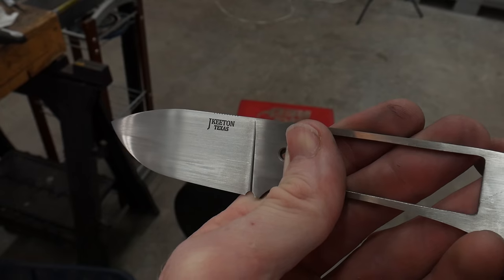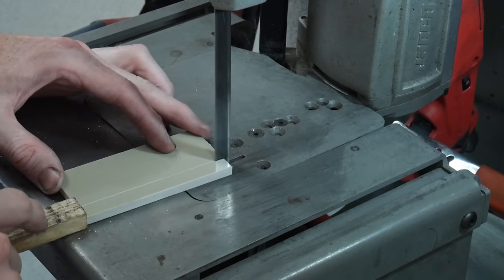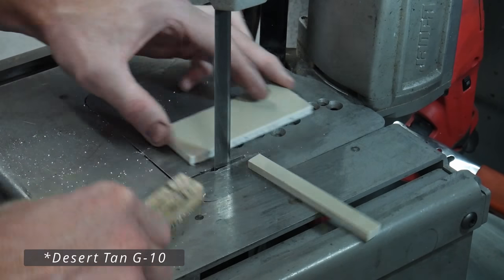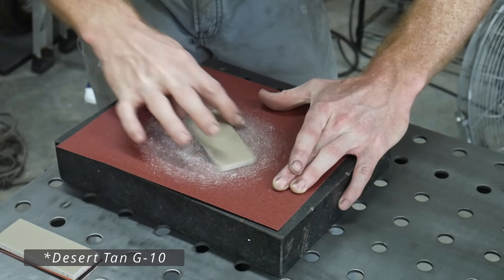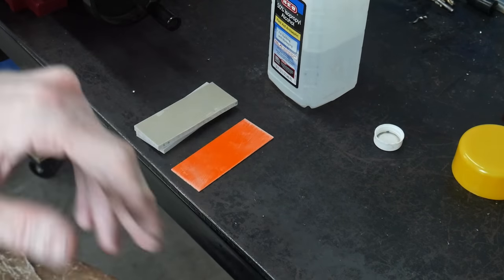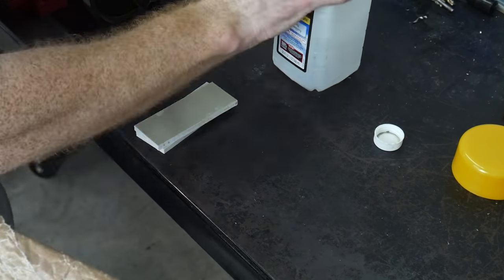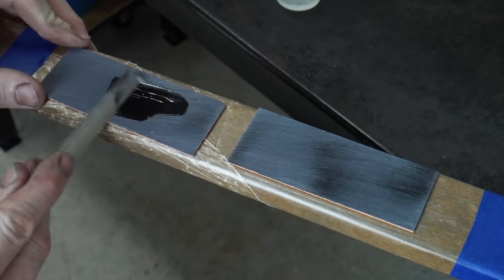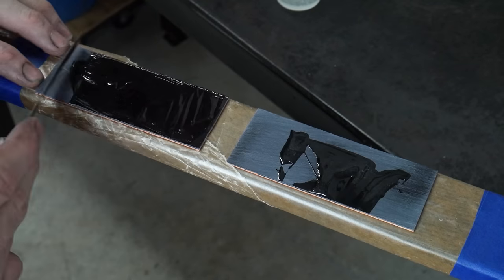Now that we have the blade completed, we'll move on to our handle. We'll be constructing this handle out of some olive G10 along with some orange and black G10 liners. Before gluing the handle scales to the liners, it's good practice to make sure the surfaces are sanded flat and clean.